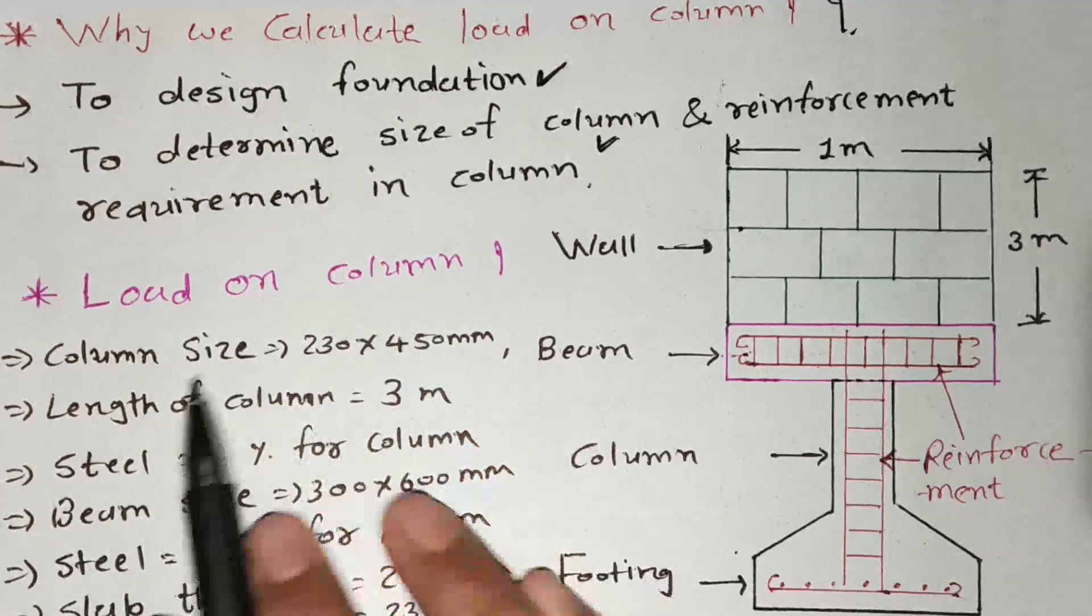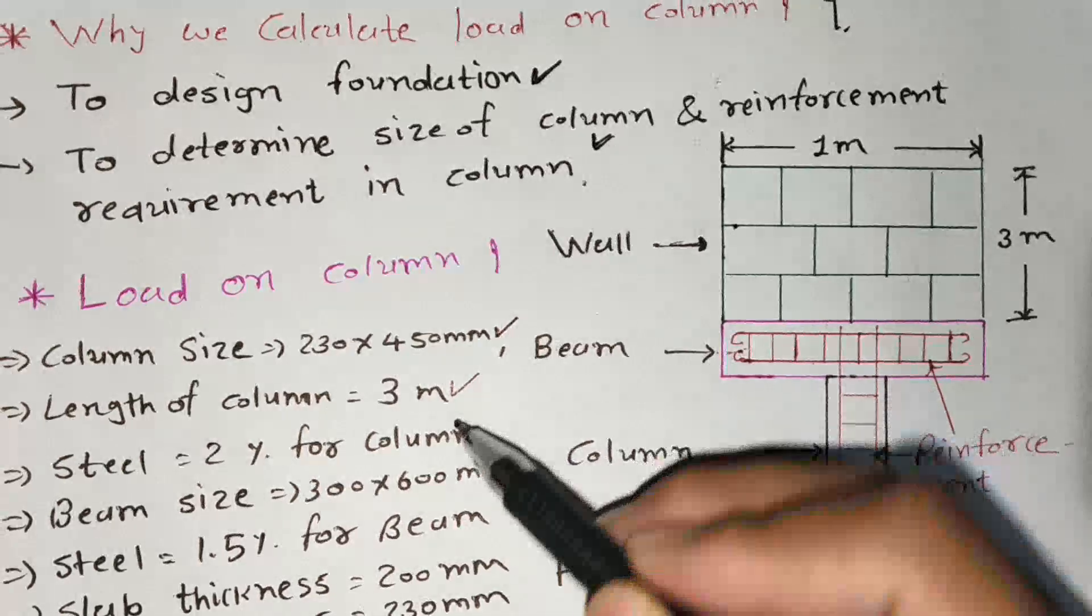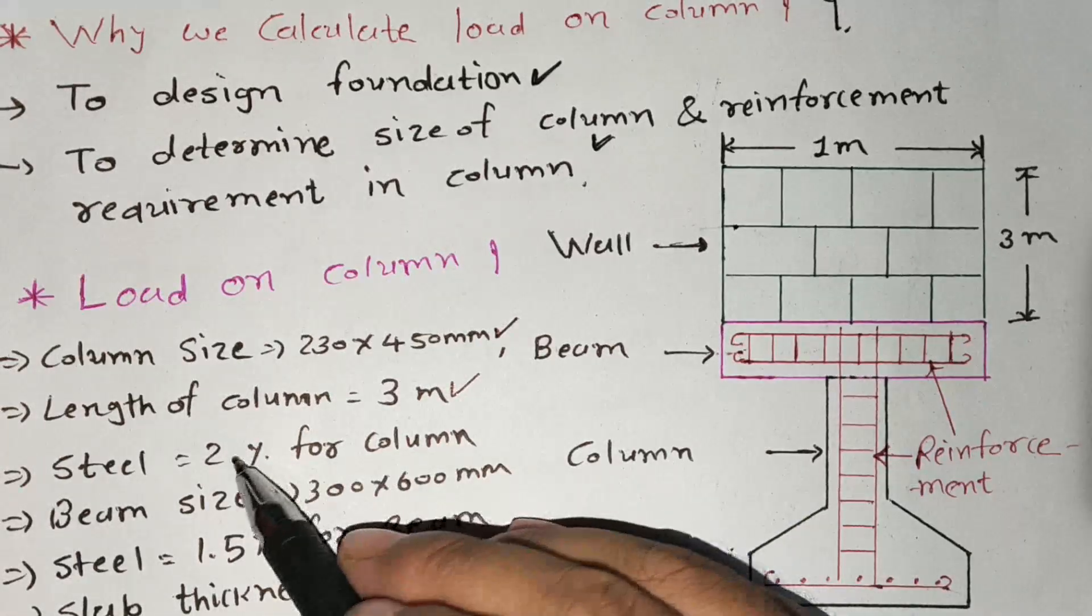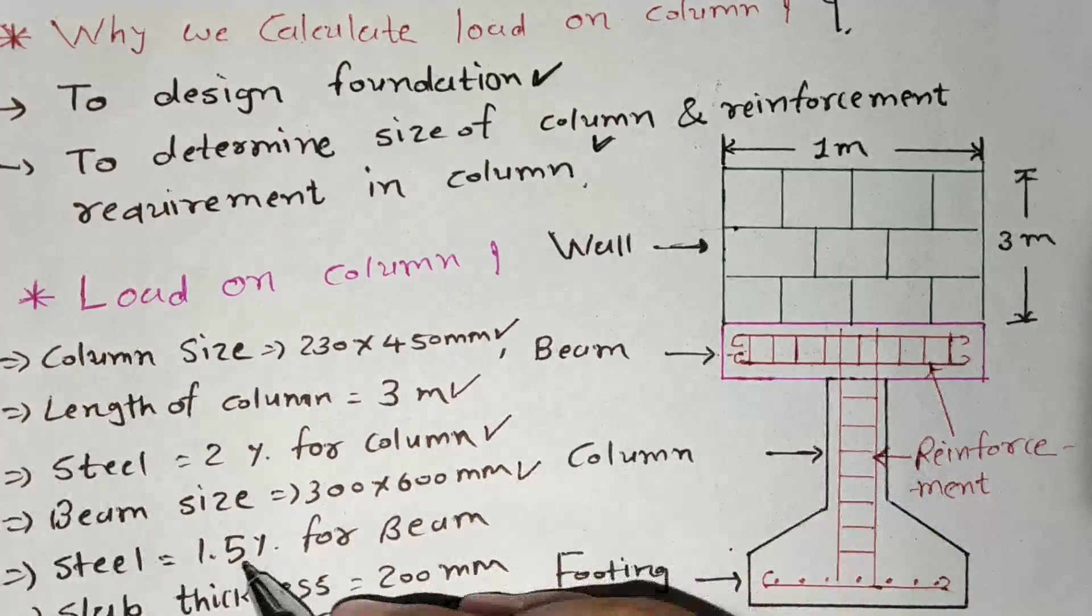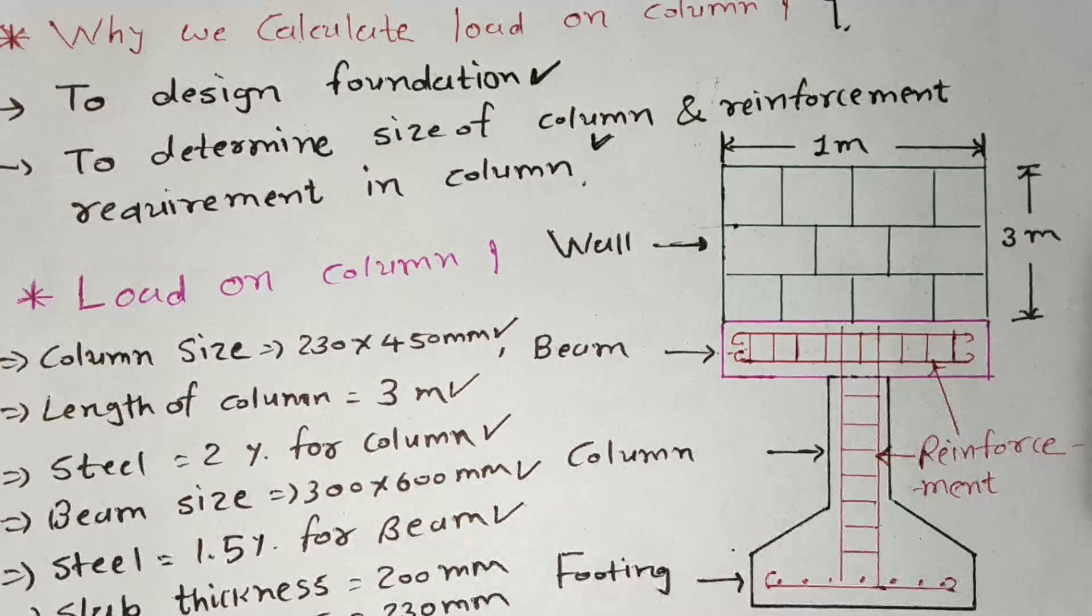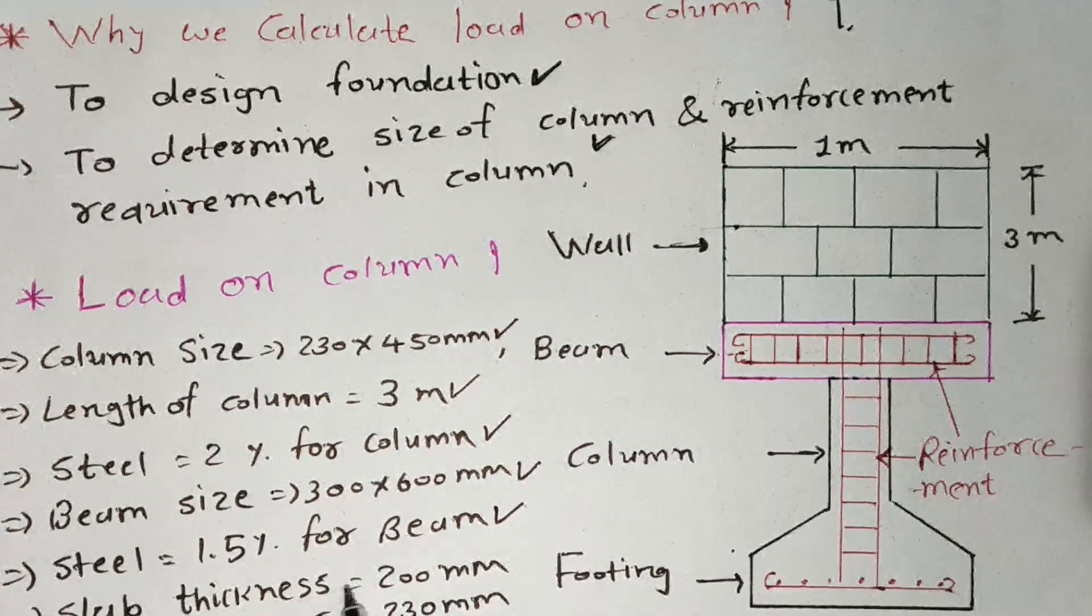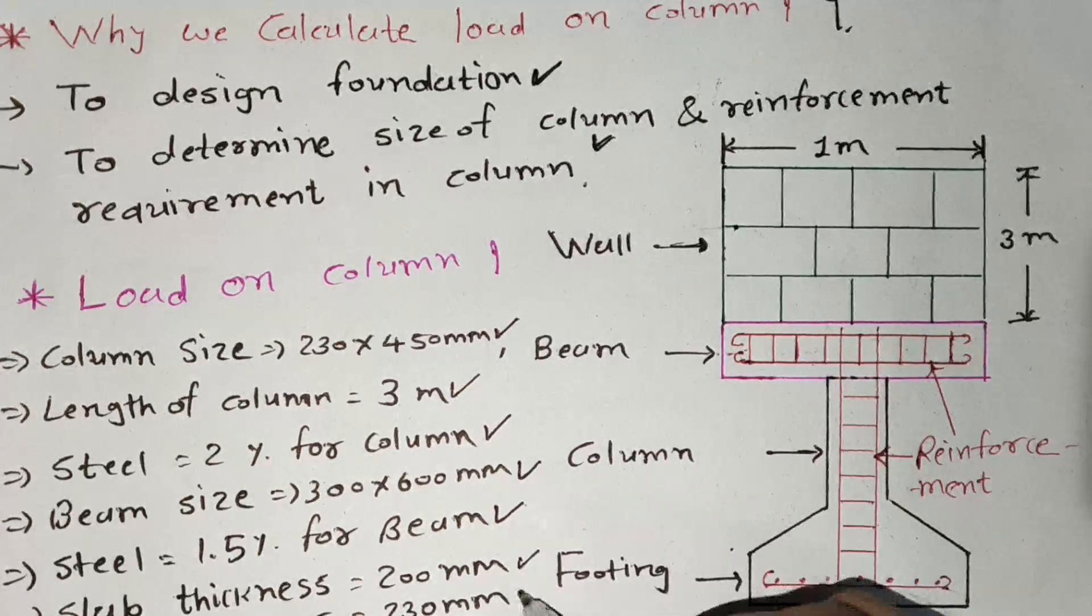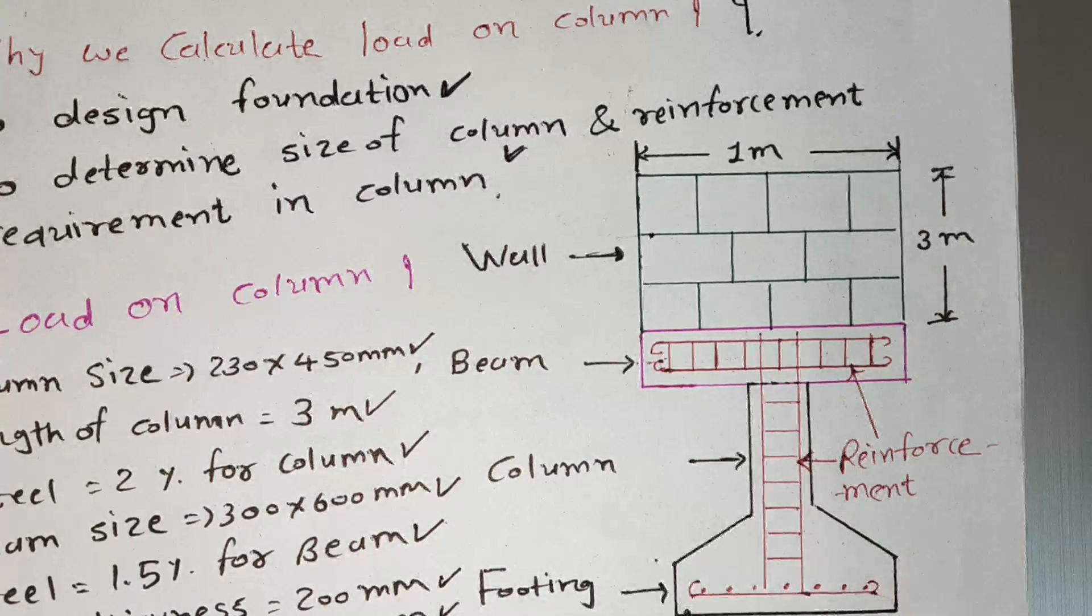Loading on column. This is the column size 230 x 450 mm, length of the column 3 meter, steel assume 2% for column, beam size is 300 x 600, steel is equal to 1.5% for the beam. Slab thickness 200 mm, wall thickness 230 mm. This is the sketch, this is the foundation.